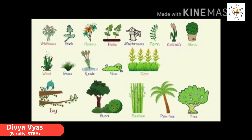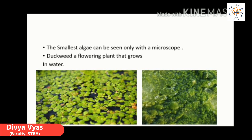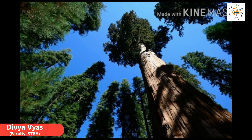Students, do you know there are over 3,75,000 different types of plants in the world and a new plant is discovered every day? Plants range in size from the very small to the very big. The smallest algae can be seen only with a microscope. And Duckweed, a flowering plant that grows in water, is so small that around 25 of them can fit on our fingernail. The tallest trees can be over 80 meters high, taller than a 25-storey building.